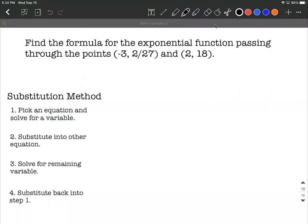Our goal is to find an exponential function that's going to be passing through these two given points: negative three comma two twenty-sevenths and eight comma eighteen.